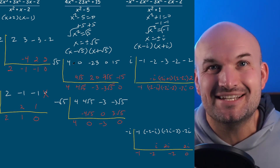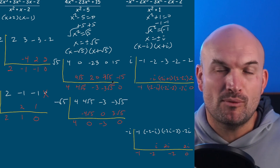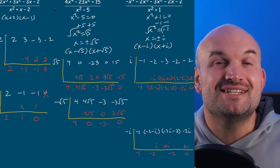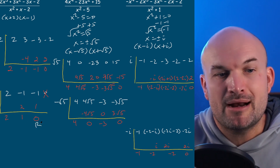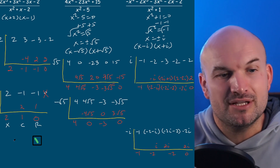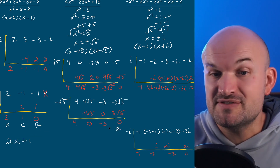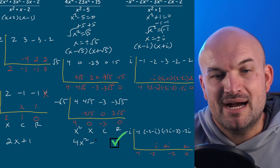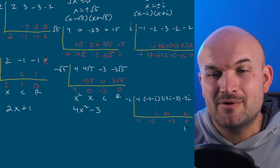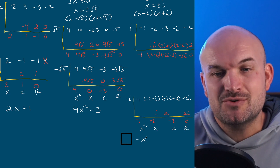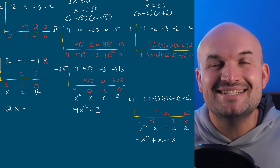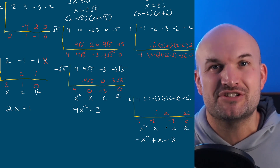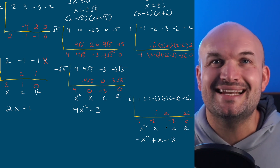We now have all of our quotients in synthetic division form, so it's time to write them as polynomials. Remember, the last term is always our remainder. Since the remainder in all these problems is zero, all of our divisors evenly divide into our polynomial. The final polynomial for example one is two x plus one. For example two, with remainder zero and coefficients for a quadratic, we write it as four x squared minus three. For the final example, that gives us negative x squared plus x minus two. You can do synthetic division when the divisor is quadratic — just factor it down to linear factors and do synthetic division twice.